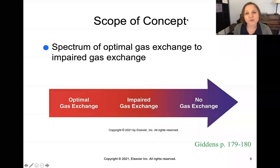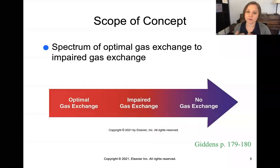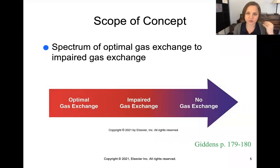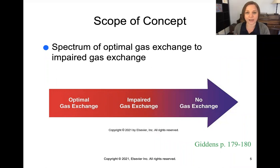Similar to our perfusion scope, the scope of this concept goes from optimal gas exchange — where everything's working well, oxygen's going in, carbon dioxide's going out — to some kind of impairment, all the way to no gas exchange.